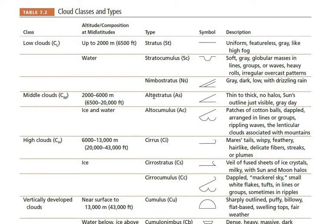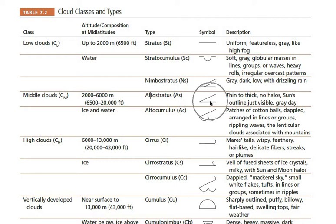For middle-level clouds, the prefix 'alto' is commonly used. Altostratus is at middle height with a stratus layer-like structure. Altocumulus is at middle altitude with a cotton-ball-like cumulus formation. These symbols are used to represent these cloud types on weather maps.